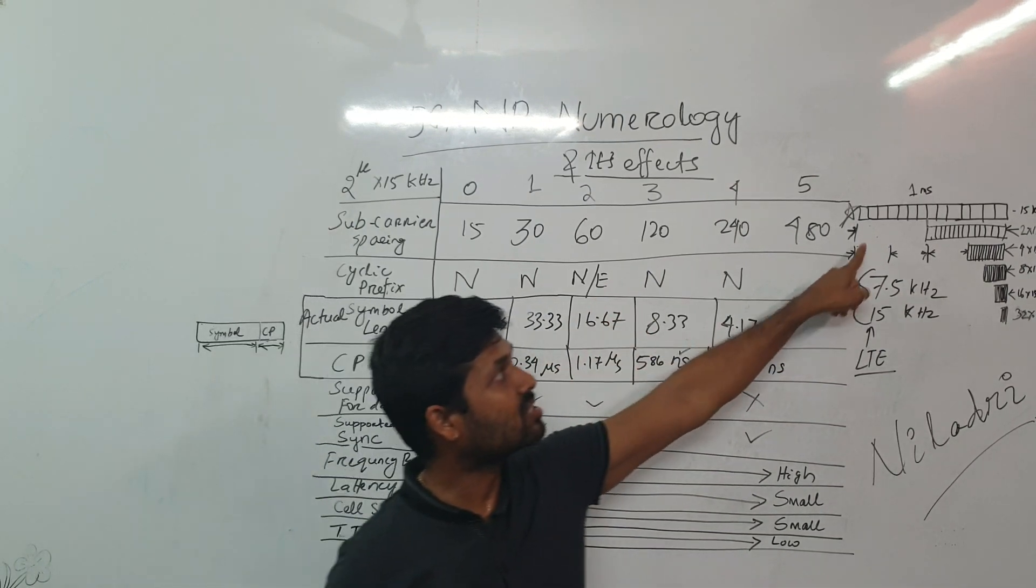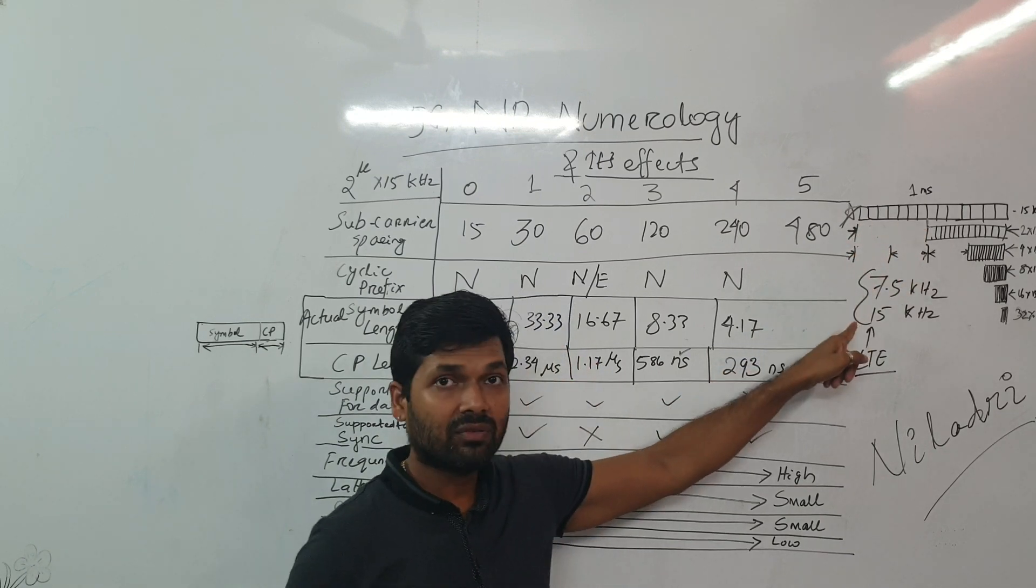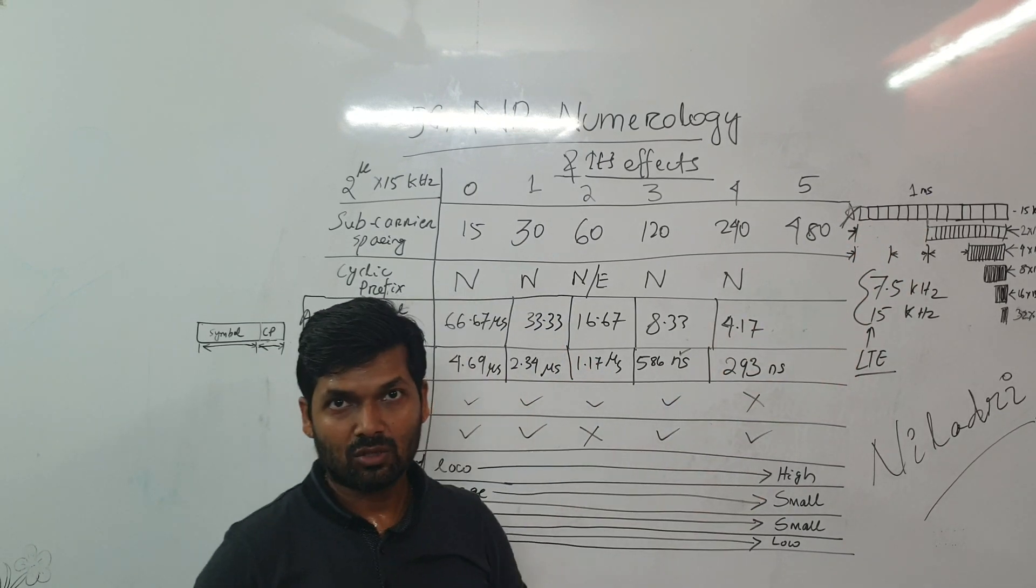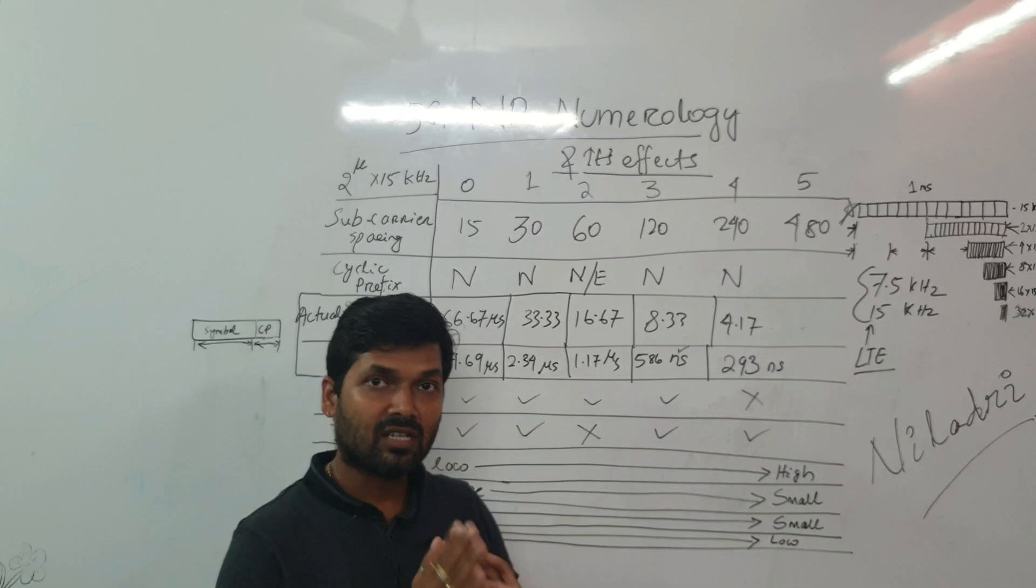And then if it is extended cyclic prefix, then it will be 6 symbols. That means 6 into 12, so 72 resource elements. So that is the difference between normal and extended cyclic prefix.